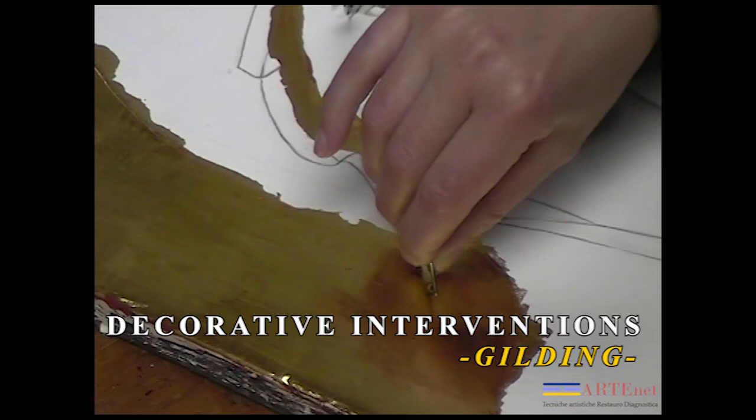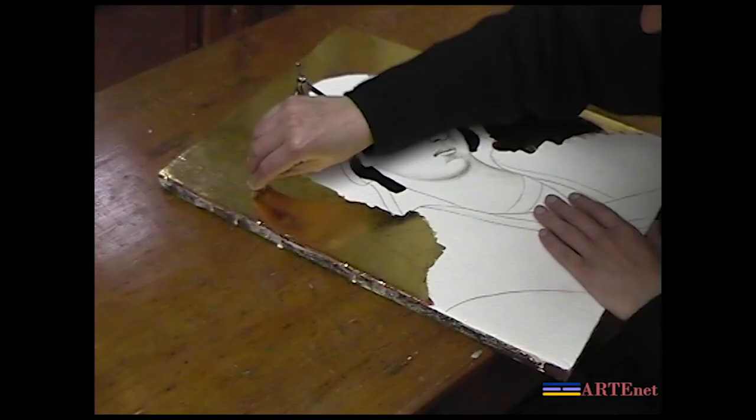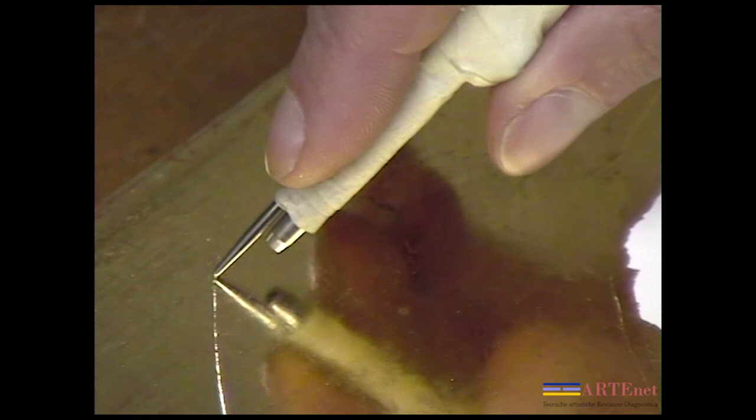The gilding of ancient paintings with a gold background involved a series of procedures aimed at obtaining the maximum brightness and splendor of the surface.